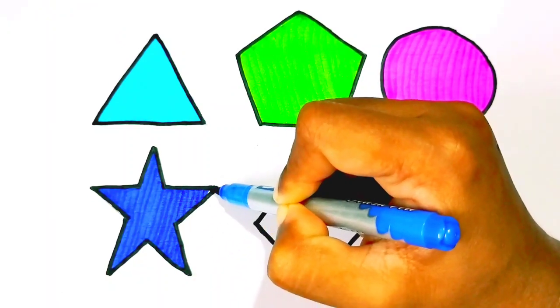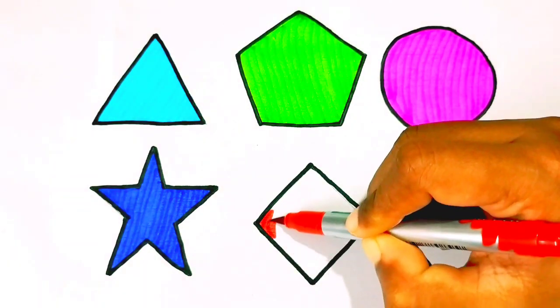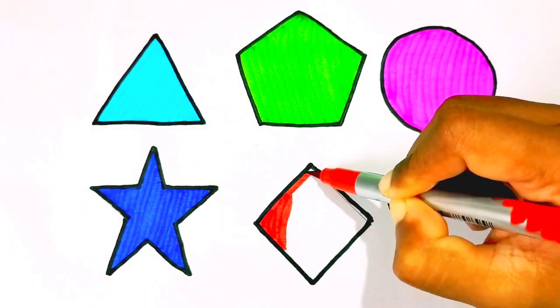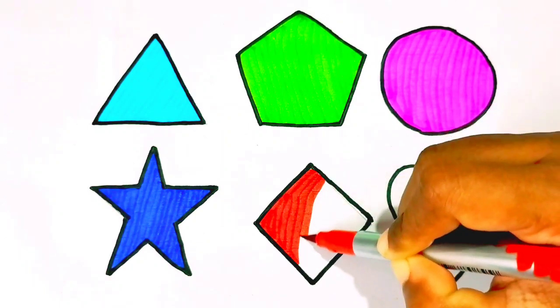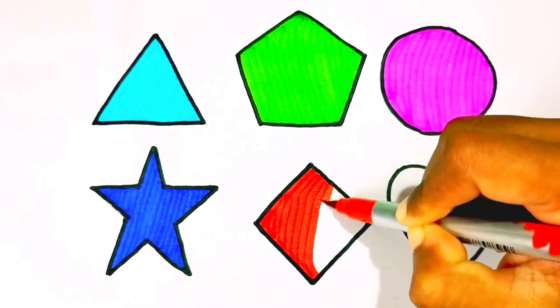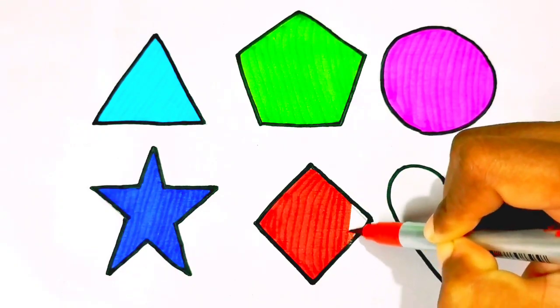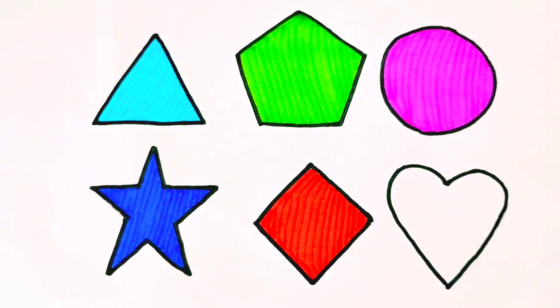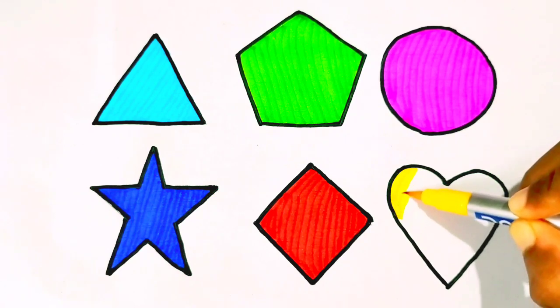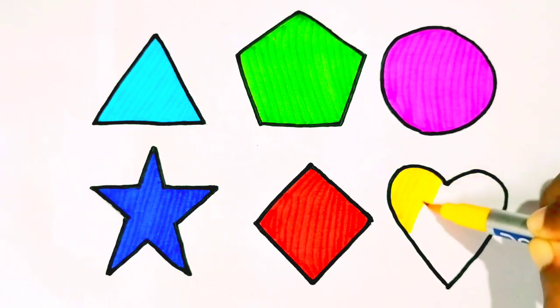Now I know my ABCs, next time won't you sing with me. Red color, red color diamond. A B C D E F G H I J K L M N O P, red color.